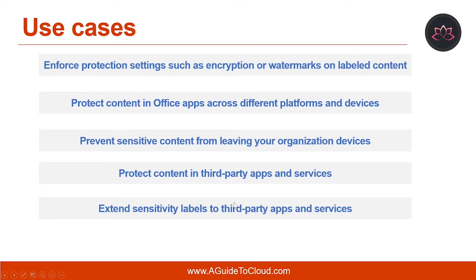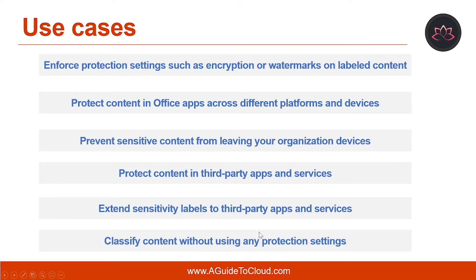The fifth use case scenario is to extend sensitivity labels to third-party apps and services. Using the Microsoft Information Protection SDK, third-party apps can read sensitivity labels and apply protection settings. And one more use case: you can classify content without using any protection settings. You can simply assign a classification to content like a sticker that persists and roams with the content as it is used and shared. You can use this classification to generate usage reports and see activity data for your sensitive content.